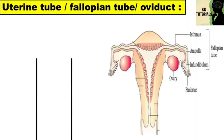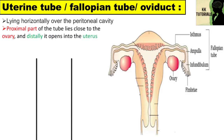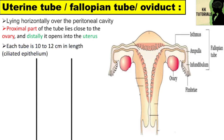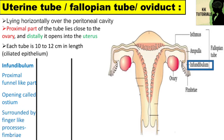Moving towards another part, i.e. fallopian tube, also called as uterine tube or oviduct. These are a pair of muscular ducts lying horizontally over the peritoneal cavity. The proximal part of the tube lies close to the ovary and distally it opens into the uterus. Each tube is 10 to 12 cm in length. It is internally lined by ciliated epithelium. It can be divided into three regions. The infundibulum is the proximal funnel-like part with an opening called osteum, surrounded by many finger-like processes called fimbria, of which at least one is long and connected to the ovary.